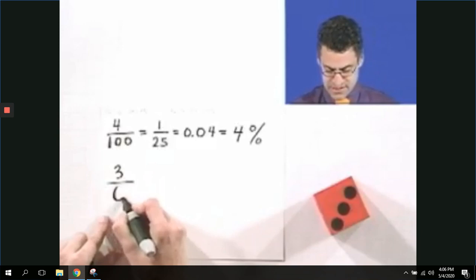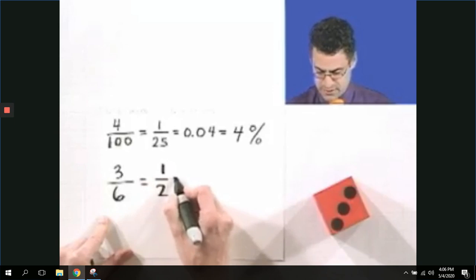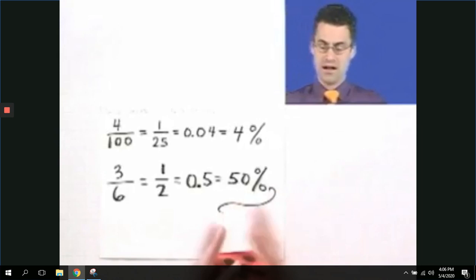Which I can write as 0.5 in decimal form, or 50%. 50% is right in the halfway mark, which means that it's just as likely to happen as not happen.